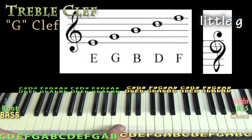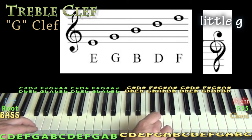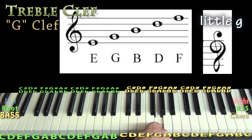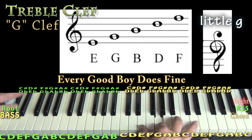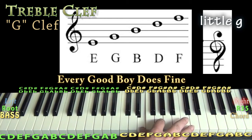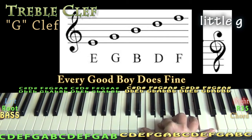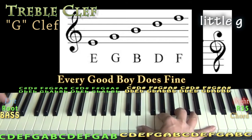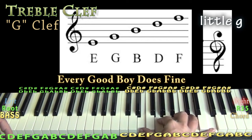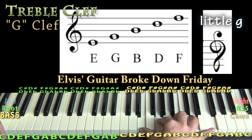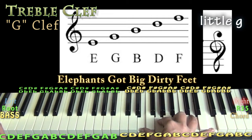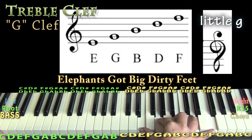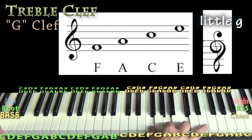The treble clef circles the G line — the G above middle C. For the lines you've probably heard 'Every Good Boy Does Fine': E, G, B, D, F from bottom to top. You'll also hear 'Elvis's Guitar Broke Down Friday' or 'Elephant's Got Big Dirty Feet.' For the spaces, they spell F-A-C-E, so the spaces are F, A, C, E — very easy to remember.